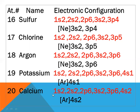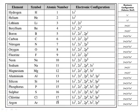Calcium, atomic number twenty: configuration 1s2 2s2 2p6 3s2 3p6 4s2. The inner configuration up to 3p6 matches argon, so we place argon here and write the valence configuration as [Ar] 4s2. You should now practice writing both the complete configuration and the shorthand valence configuration using noble gases or the filled electronic configuration.